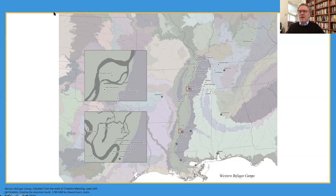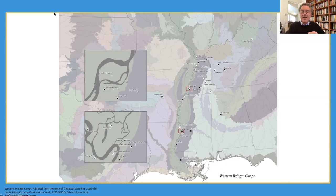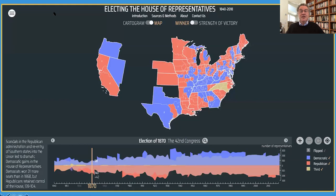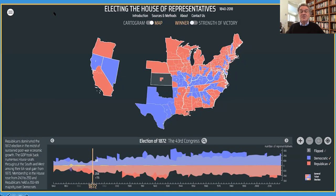Dozens of Black men served in the constitutional conventions and were elected to other offices, including the U.S. Senate and the House. Under Reconstruction, the new constitutions came into law and the Southern states were admitted to the United States one at a time in the late 1860s and early 1870s. The states with the largest proportions of Black people — South Carolina, Mississippi, Louisiana — came under Republican control. Looking at the congressional votes in 1870, you can see Mississippi, Louisiana, southern Alabama, and South Carolina controlled by Republicans. This is Reconstruction at its heyday.